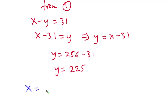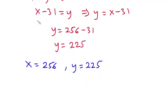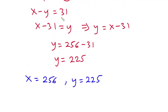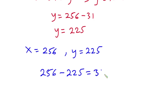So we have y equal to 225. In all, we have x equal to 256 and y equal to 225. Now let's verify: x minus y is equal to 31, so 256 minus 225 is indeed 31.